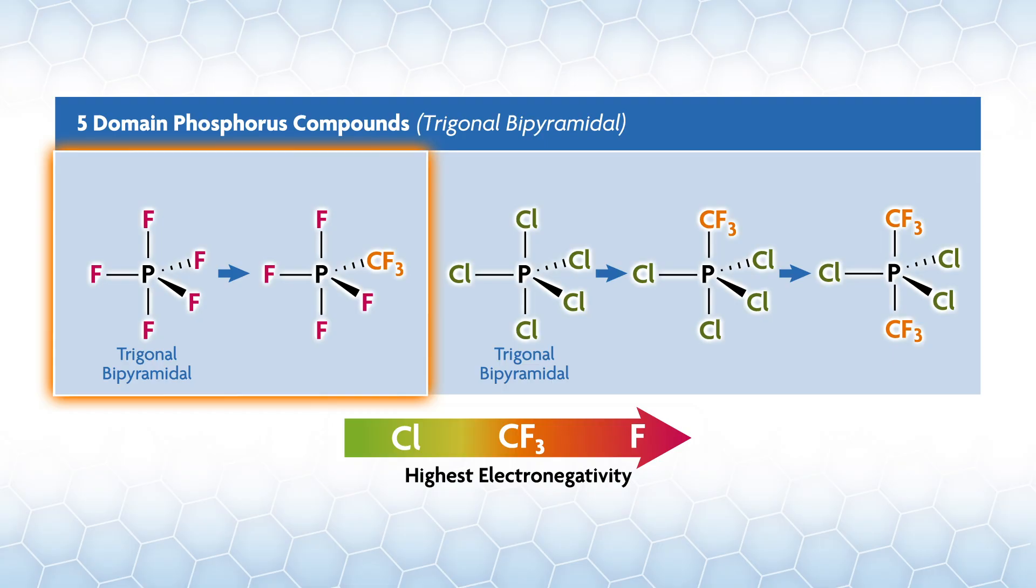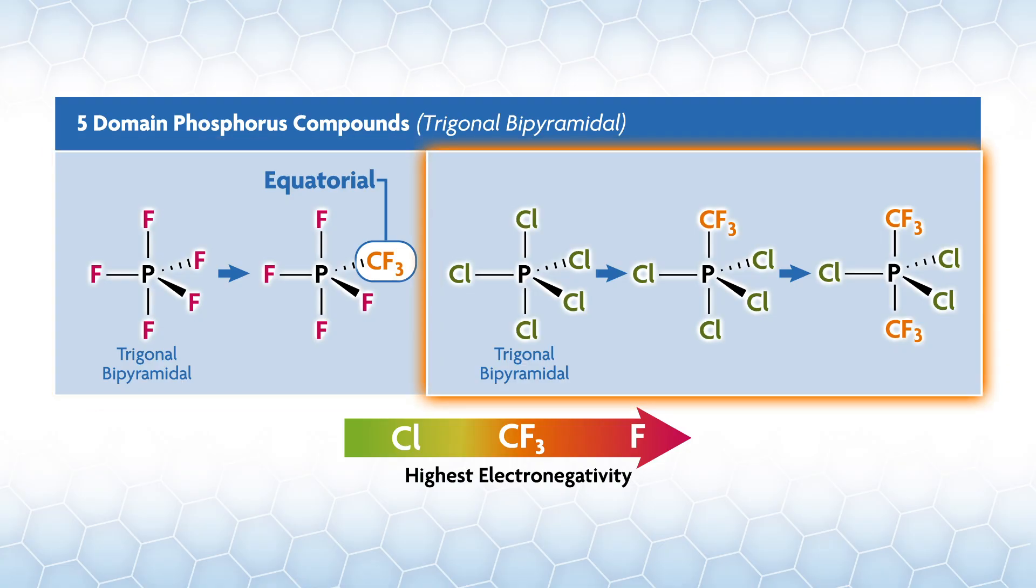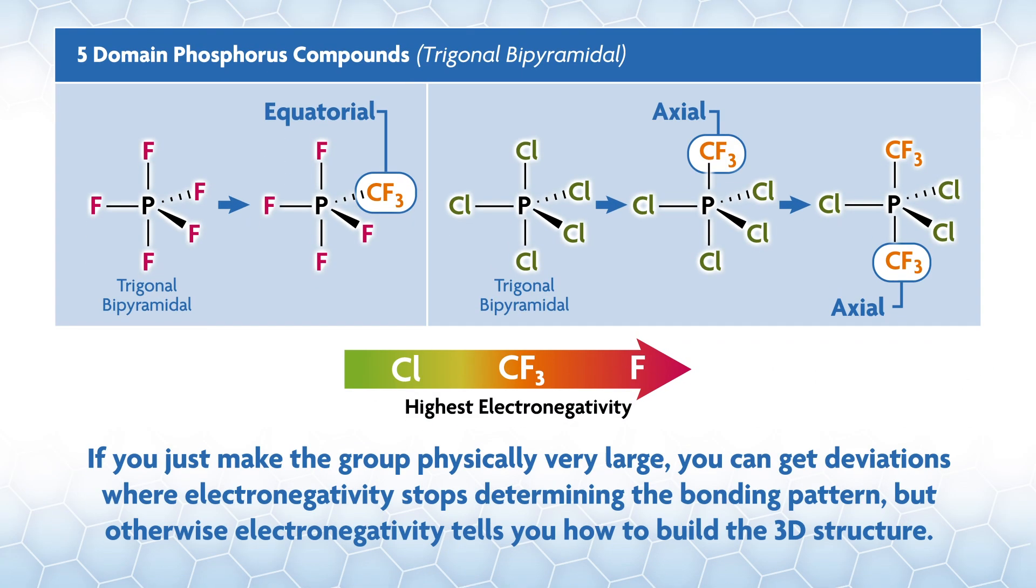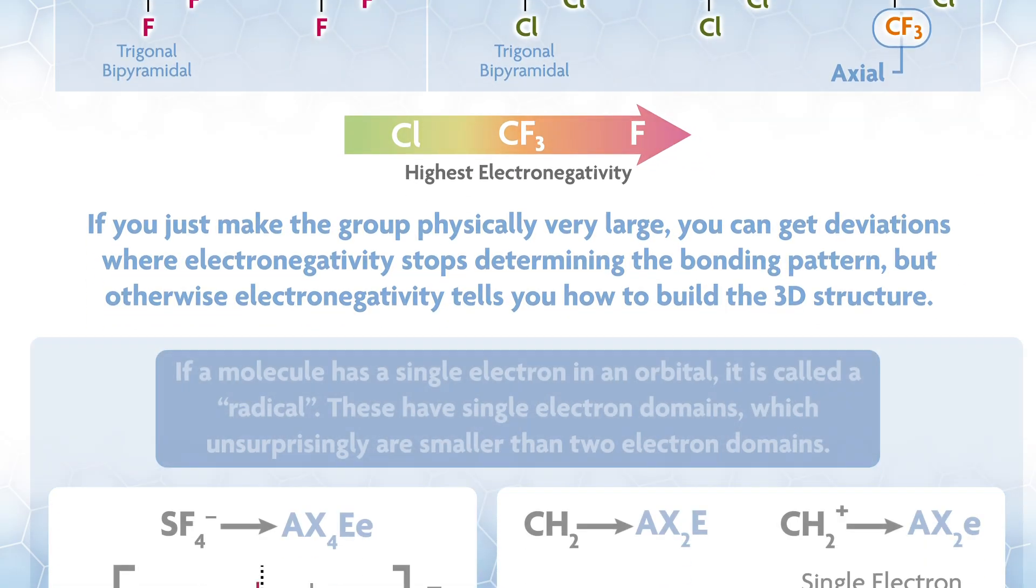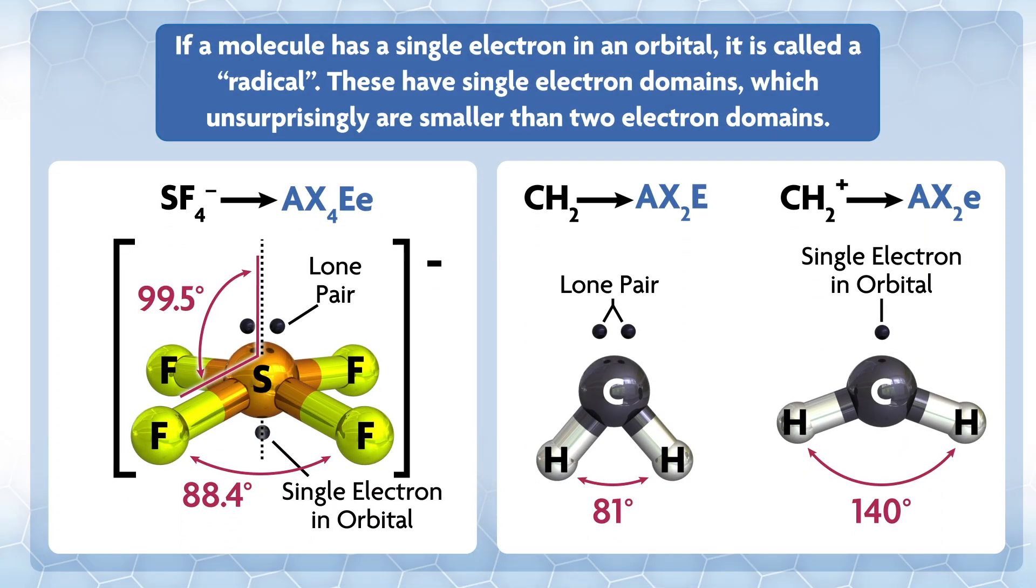PF5, as you would expect, is trigonal bipyramidal. If you replace one of the fluorines with a less electronegative CF3, you expect it to go into the one or more open equatorial sites, which is exactly what is observed. If you take TBP PCl5 and replace one chlorine with more electronegative CF3, you expect replacement at the axial site, which is what you get. If you replace another chlorine with CF3, it goes in the other axial site.